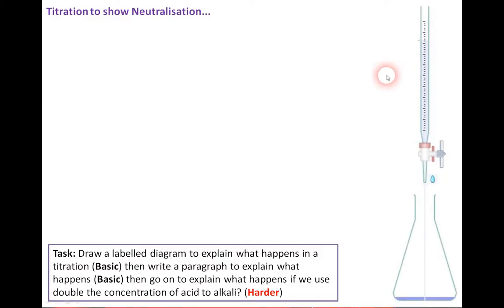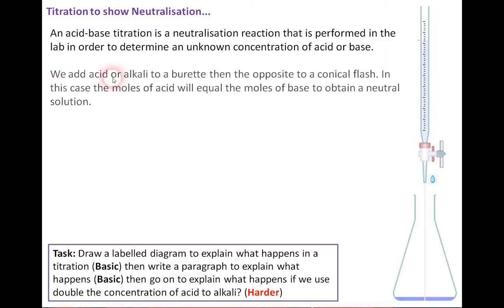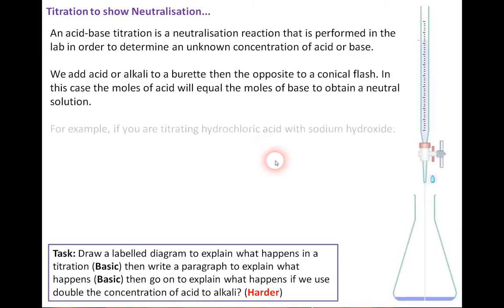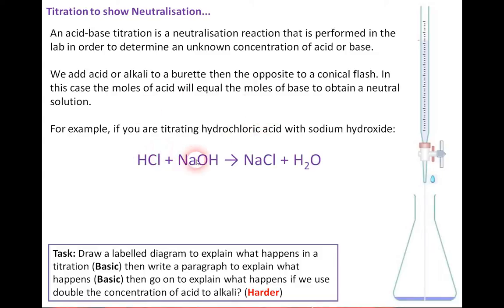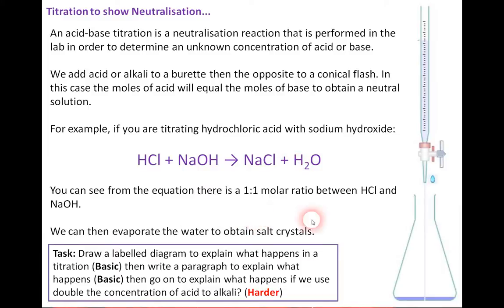Titration can show neutralisation. An acid-base titration is neutralisation performed in the lab to determine an unknown concentration of an acid or base. Acid is added to the burette and drips slowly into the conical flask. The moles of acid equal the moles of base to obtain a neutral solution. For example, titrating hydrochloric acid with sodium hydroxide gives NaCl and water — a one-to-one ratio between HCl and NaOH. The water can then be evaporated to obtain salt crystals.